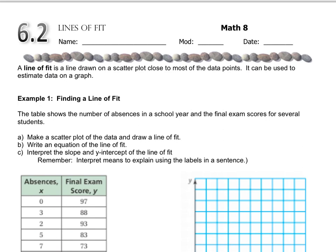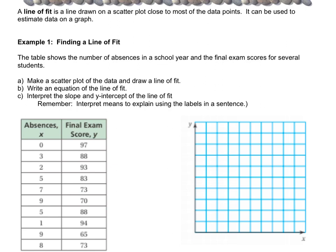So as we scroll down to example 1, it asks us to make a scatterplot based on this data. The data is the number of absences in a school year and the student's final exam scores. We've got all these different students, the number of times they were absent, and then we also have their final exam score.